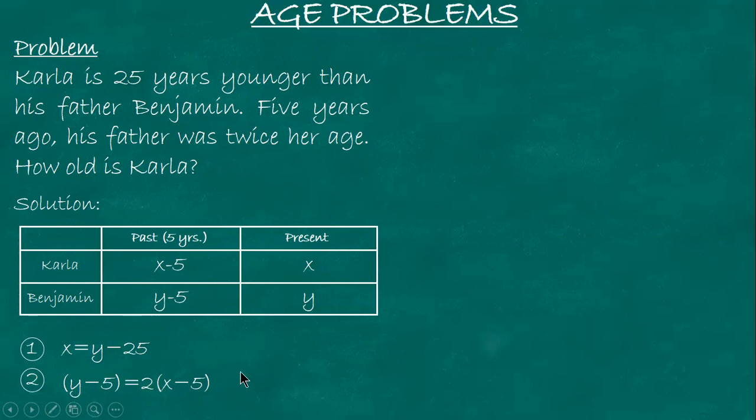Now you have two equations with two unknowns. If you've studied or have an idea about the different methods on how to analyze simultaneous equations, you can apply those - like substitution, comparison, elimination, or if you want, determinants or Cramer's rule.